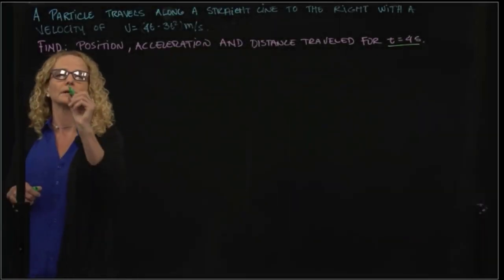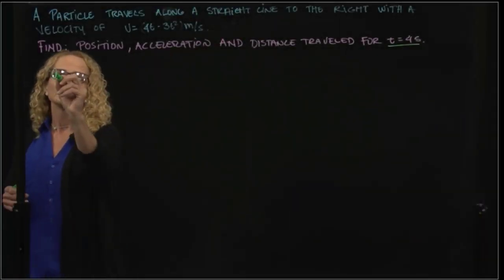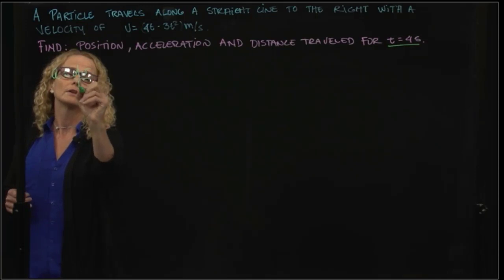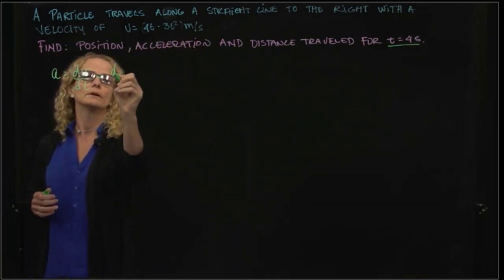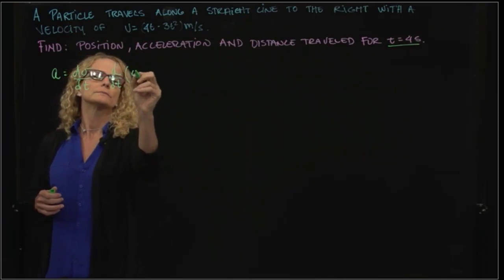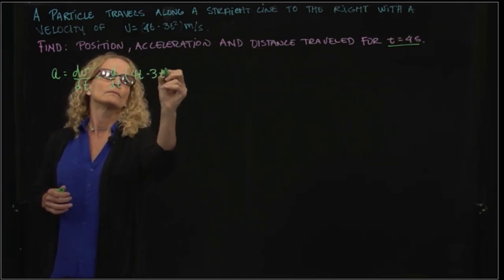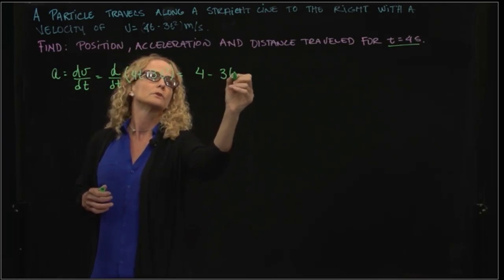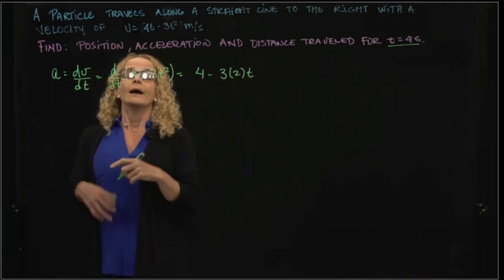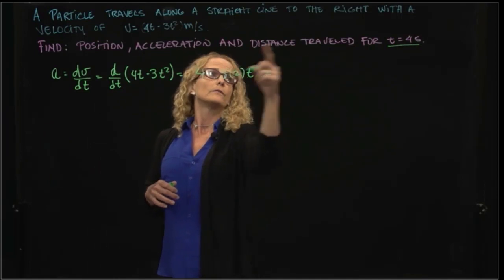Therefore, for the acceleration, we know that the acceleration is the derivative of the velocity, and we have the expression for the velocity. So we will derive that expression, and that gives us 4 - 3 times 2t. And we want to evaluate that in 4 seconds.